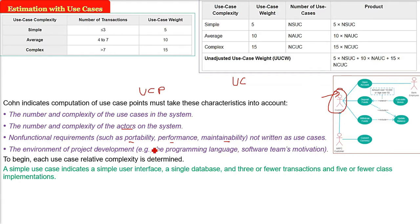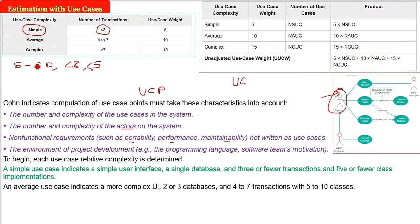A simple use case indicates a simple user interface. It can be a single database, fewer than three transactions, and five or fewer class implementations. This is simple complexity.